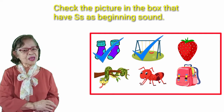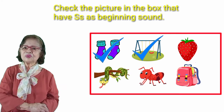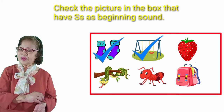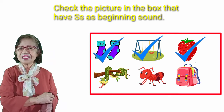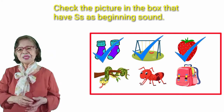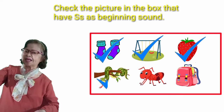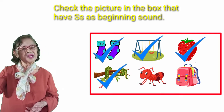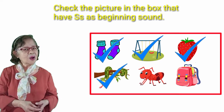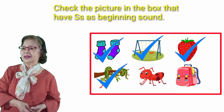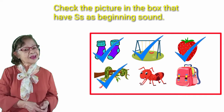Let's go to the word and object strawberry — it starts with letter S, so we check it. We see a snake — we're going to check snake because it starts with letter S. How about the ant? No. How about the bag? We don't check bag. We'll finish checking our letter S.